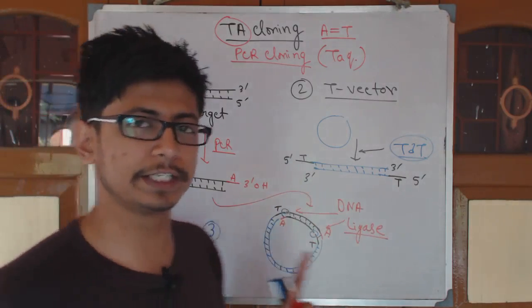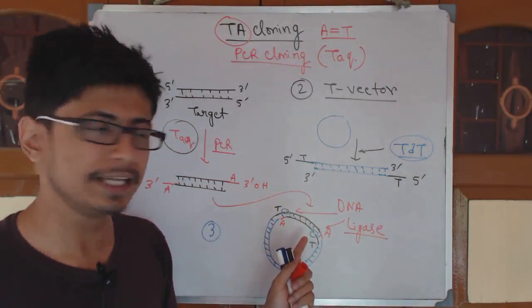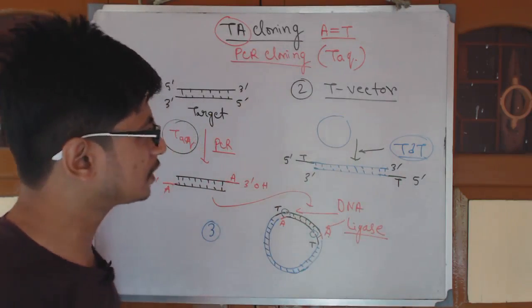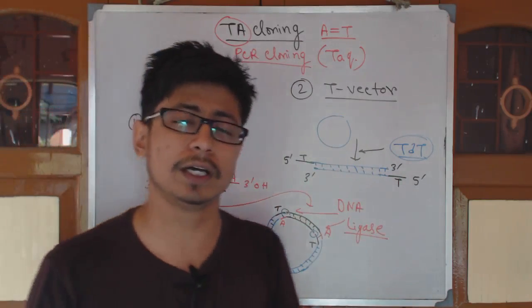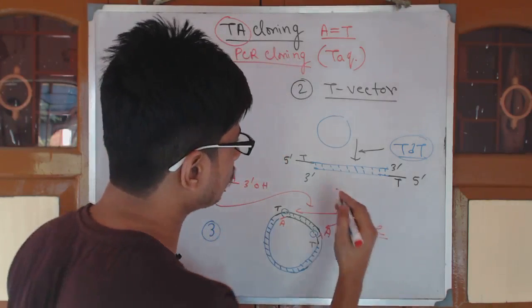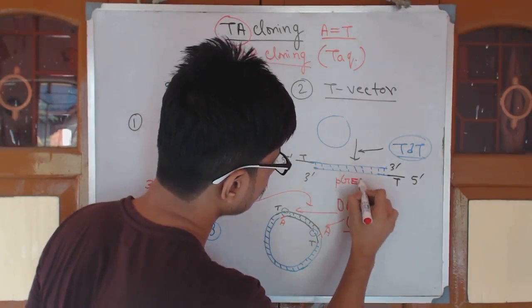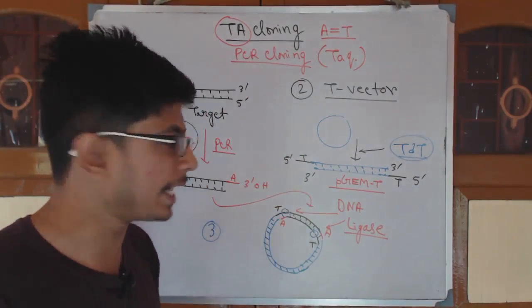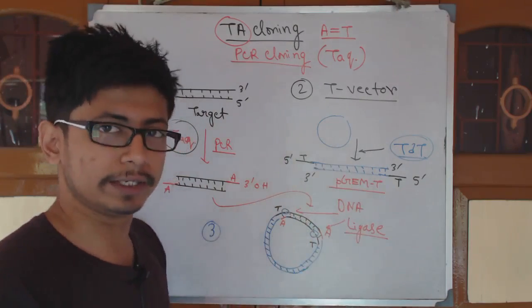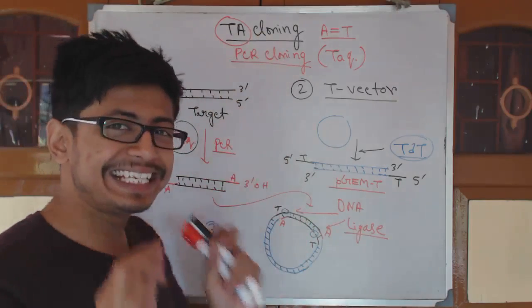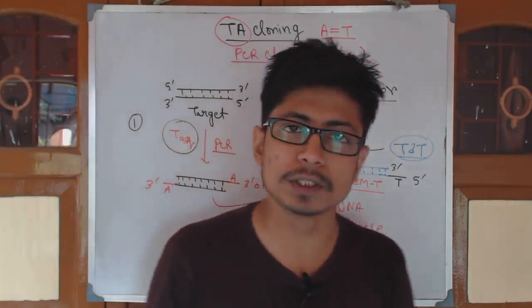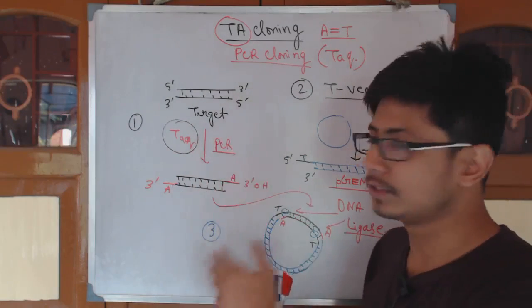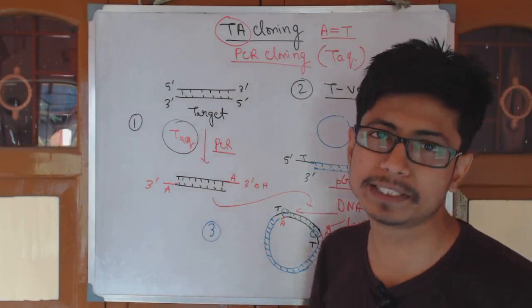Then we have our vector with the target DNA inside — this is how the whole process is done. For the T vector, there are multiple examples from many different companies. One example is pGEM-T, which is specifically designed for this TA cloning. That is why it is known as TA cloning and PCR cloning, because the process of target DNA preparation is combined with PCR using Taq polymerase enzyme.